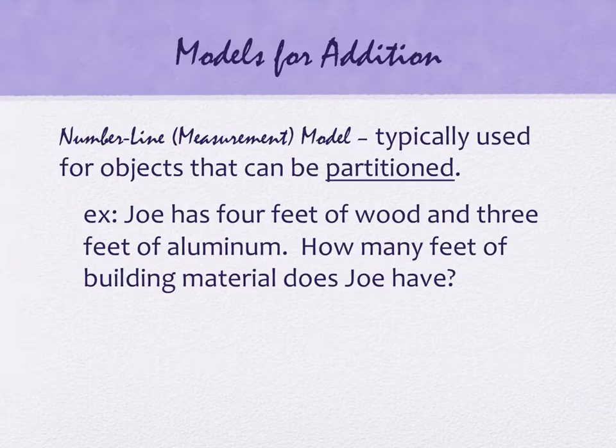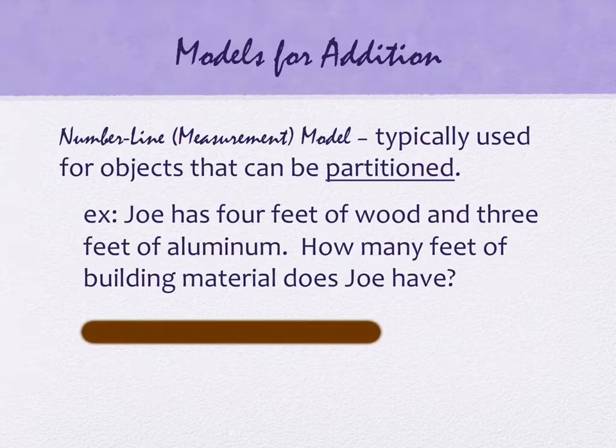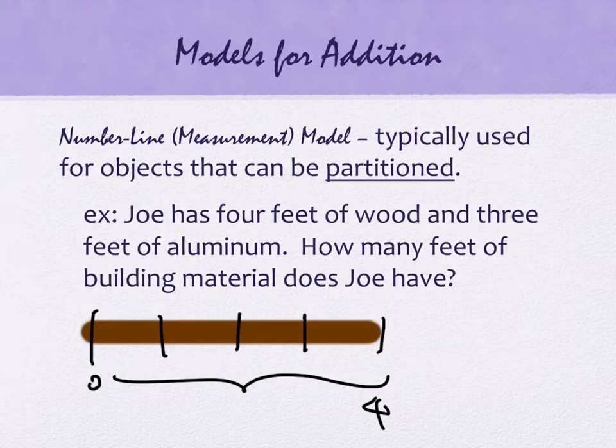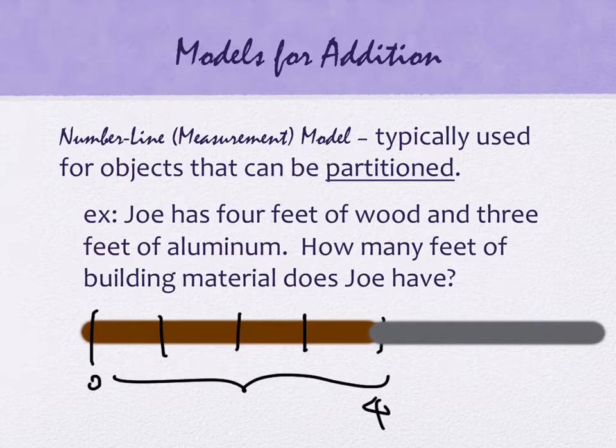This is an example of that. It's typically used for objects that can be partitioned. When you're working with little kids, you don't talk about half a crayon, we just count a crayon as a crayon. But there are objects for which making half of something makes perfect sense—lengths, miles, portions of an hour. It makes sense to partition those and not count them like a whole object. This is called the partition model, measurement model, the number line model. Joe has four feet of wood and three feet of aluminum. How many feet of building material does Joe have? My wood should be brown. Here's my four feet, and I'll mark it off. It starts at zero, and I've got one, two, three, four. It's four feet long.